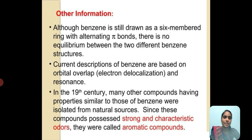Although benzene is still drawn as a six-membered ring with alternating pi bonds, there is no equilibrium between the two different benzene structures. Current descriptions of benzene are based on orbital overlap and resonance. In the 19th century, many compounds having properties similar to benzene were isolated from natural sources. Since these compounds possessed strong and characteristic odors, they were called aromatic compounds.